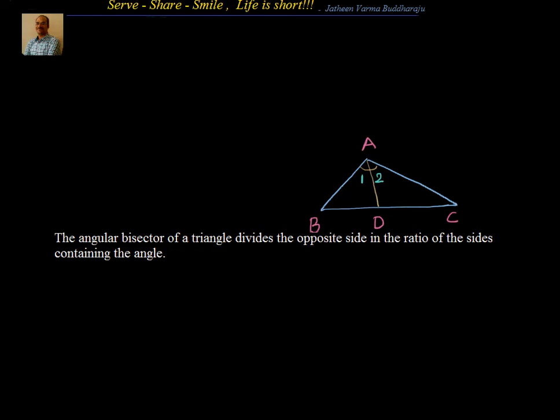To understand that, let's consider a triangle. We have triangle ABC and we see that AD is the angle bisector of angle A, or angle BAC. So by that we know that angle 1 is equal to angle 2. What we have to prove is that BC is divided in the ratio of BA to AC — or we can say BD by DC is equal to BA by AC. This is what we have to prove.